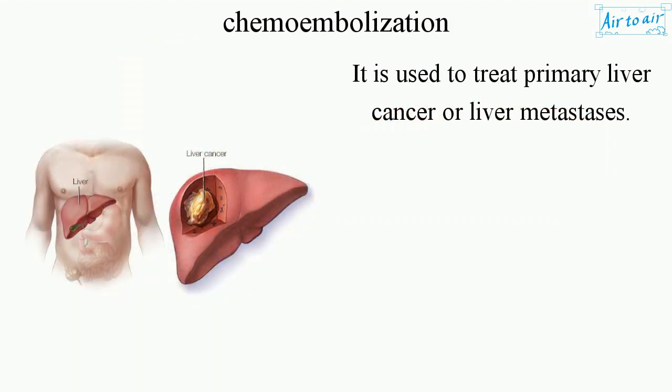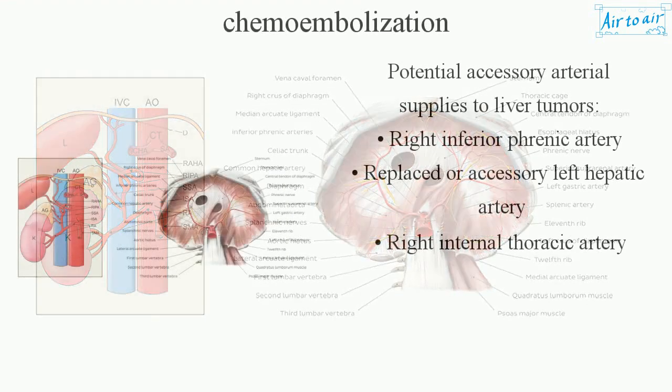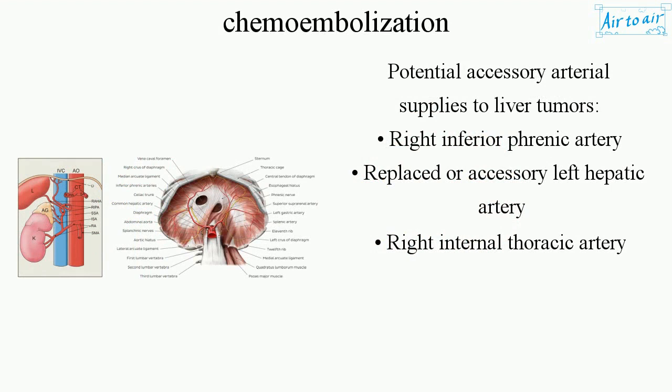It is used to treat primary liver cancer or liver metastasis. Potential accessory arterial supplies to liver tumors include the right inferior phrenic artery, replaced or accessory left hepatic artery, and right internal thoracic artery.